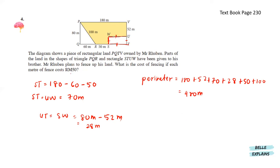Since the cost per meter is RM50, for 480 meters we calculate the cost by multiplying 480 with RM50. That gives us RM24,000.